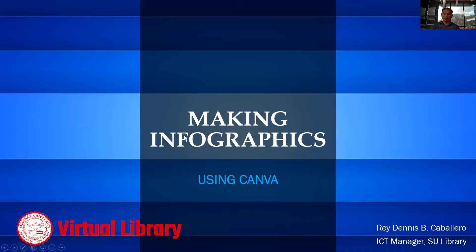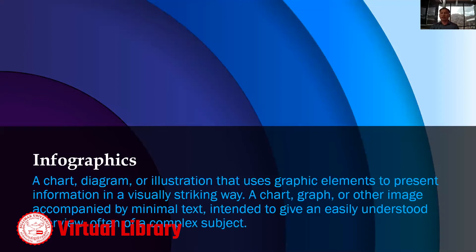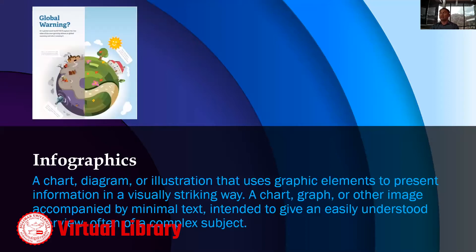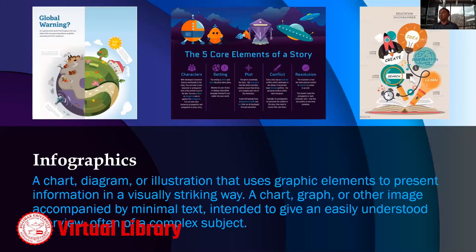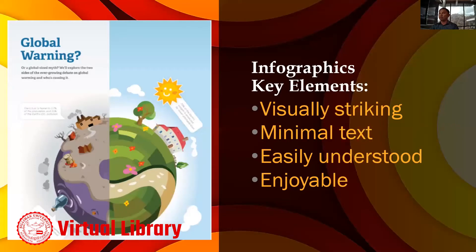So, making infographics using Canva. An infographic is generally a chart, diagram, or illustration that uses graphic elements to present information in a visually striking way, accompanied by minimal text. Here are some examples — one about global warning, another about the five core elements of a story, and an education infographic. The infographic key elements should be visually striking with minimal text, easily understood, and enjoyable.